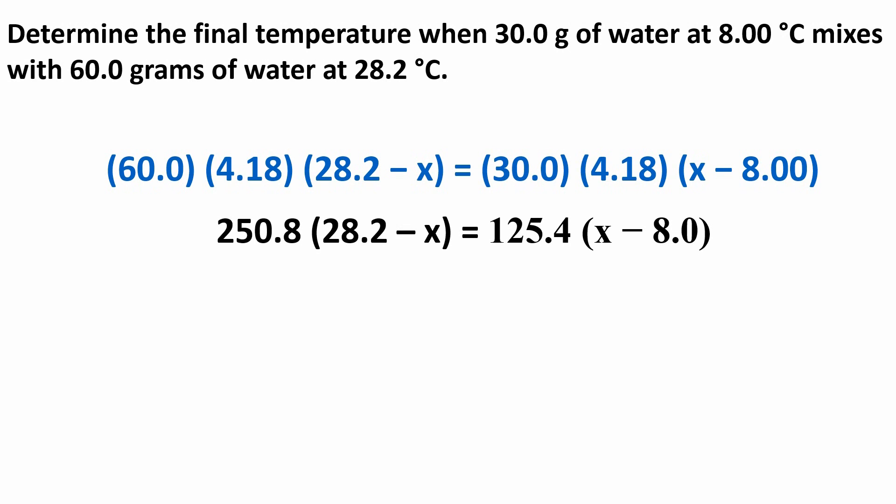Solving, we get 250.8 times (28.2 minus x) equals 125.4 times (x minus 8). And 7072.6 minus 250.8x equals 125.4x minus 1003.2.